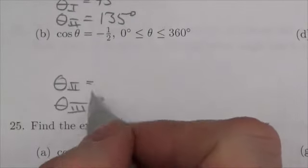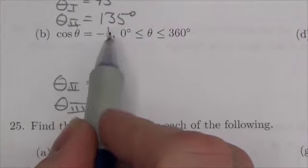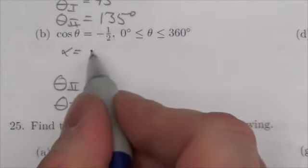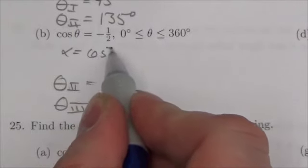Okay, so right there I've dealt with the negative. Now I want to deal with the size of the ratio, the value. Okay, where does cosine take on a value of one-half? Now again, don't worry about the negative.